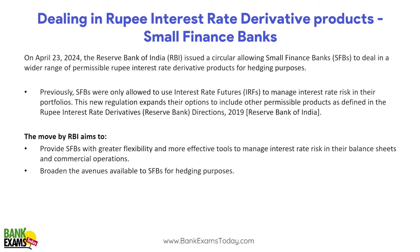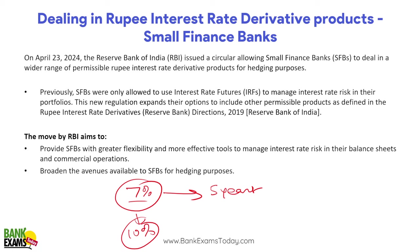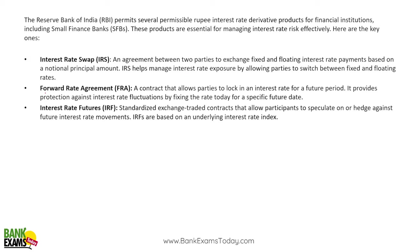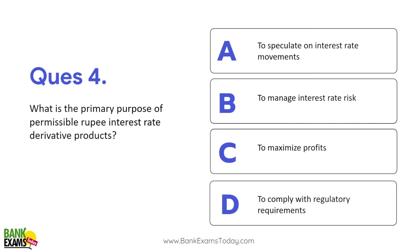Dealing in rupee interest rate derivative products by small finance banks. Past mein interest rate bahta ghatta rehta hai — agar koi bank 7% pe 5 years ke liye invest kar de, aur ek saal baad interest 10% ho jaye, to bank ko bahut loss ho sakta hai. Is risk ko manage karne ke liye bohut saare tools hain. Till date, jo small finance banks the, they were allowed to use interest rate futures only. But now RBI said aap baaki ke tools bhi use kar sakti ho — for example, interest rate swaps aur forward rate agreements bhi aap use kar sakti ho, jo pehle small finance banks ke liye allowed nahi tha, ab allowed hai. The primary purpose of permissible rupee interest rate derivative products is to manage the interest rate risk.